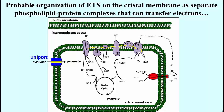Uniport brings pyruvate into the mitochondrial matrix. Antiport brings ADP into the matrix while exporting the newly synthesized ATP to the cytoplasm.